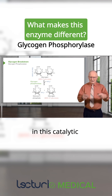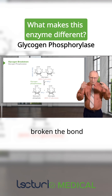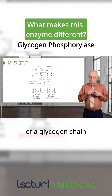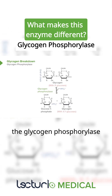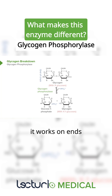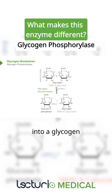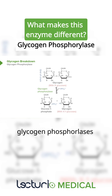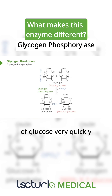In this catalytic action, the enzyme has broken the 1-4 bond at the end of a glycogen chain. It's important to recognize that glycogen phosphorylase works only on ends — it doesn't cut in the middle; it sequentially chews its way into a glycogen. One of the reasons the branchedness of glycogen is important is that the more ends there are, the more glycogen phosphorylases can work simultaneously, sequentially releasing a tremendous amount of glucose very quickly.